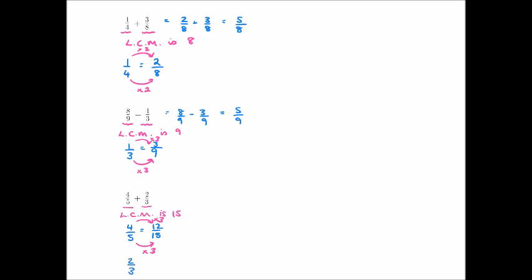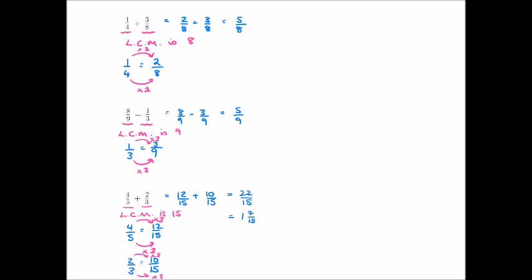For two thirds, we want a denominator of fifteen, so we multiply by five. Two times five is ten, so two thirds equals ten fifteenths. Therefore four fifths plus two thirds is twelve fifteenths plus ten fifteenths. Twelve plus ten is twenty-two, giving twenty-two fifteenths. It's always sensible to write this as a mixed number: fifteen goes into twenty-two once with a remainder of seven, so the answer is one and seven fifteenths.